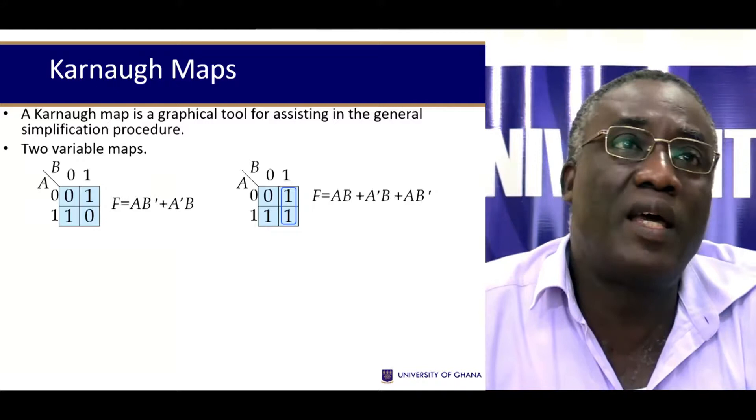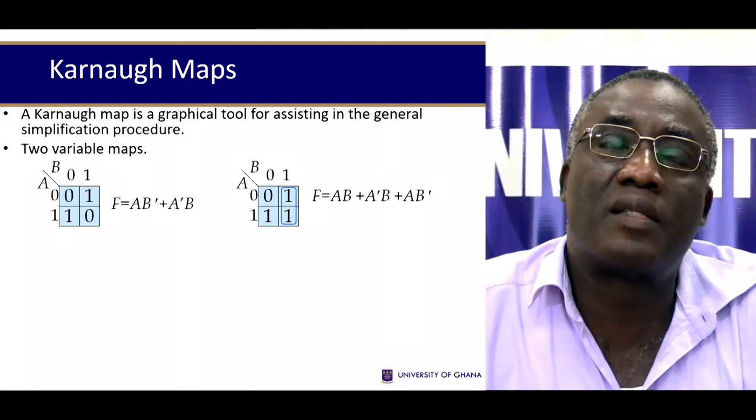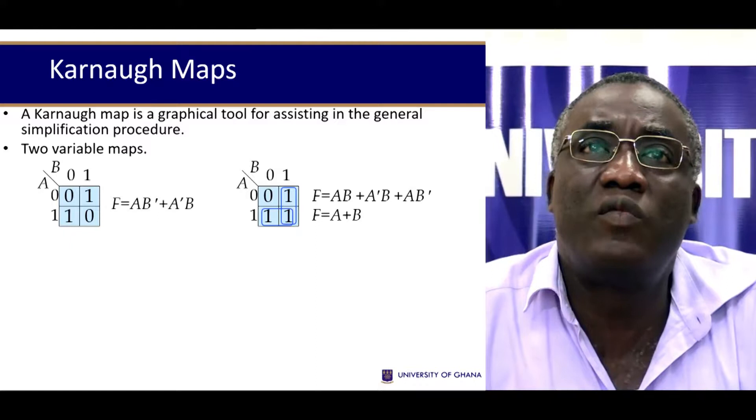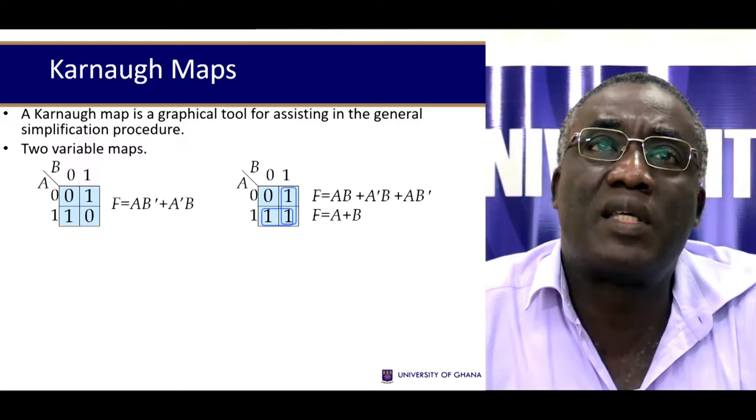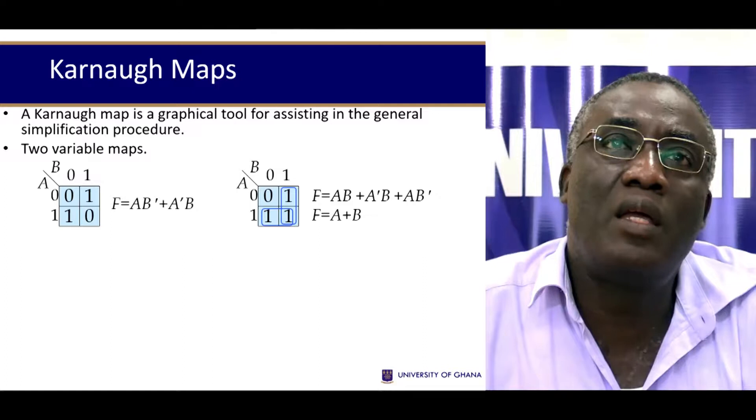So if you take this here, you can encircle these ones, and then you can also encircle these ones. So the simplified form of this, if you encircle the first ones here, when you go across here the A gets out because you go from zero to a one. So not A and A get knocked out, so you're only left with B.